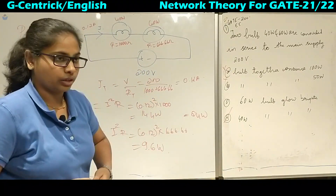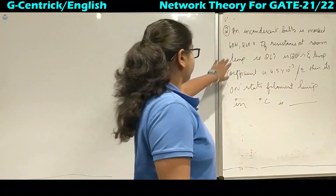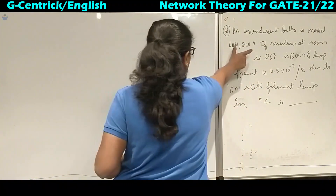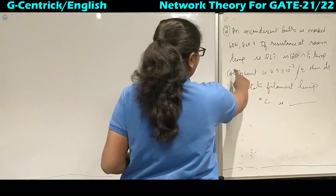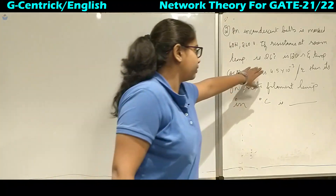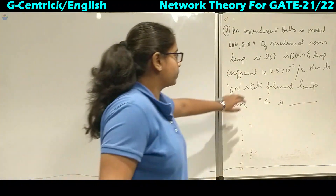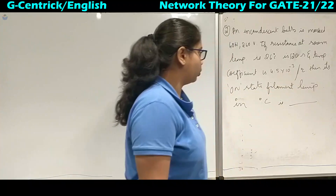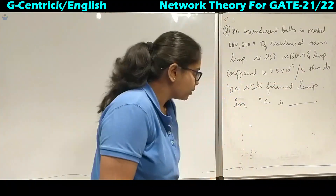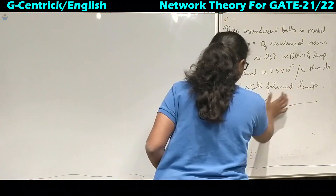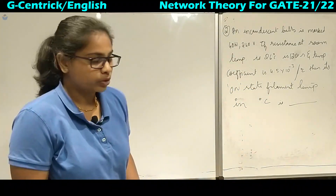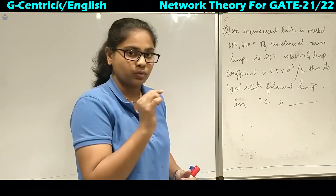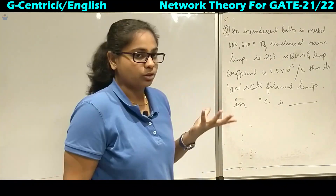We will move on to the second question. An incandescent bulb is marked 40 watts and 240 volts — that is the rating of the bulb. The resistance at room temperature (26°C) is given as 120 ohms. The temperature coefficient is given per degree Celsius. We need to find the filament temperature in degrees Celsius at the on-state — that is, the temperature immediately when the bulb is switched on.